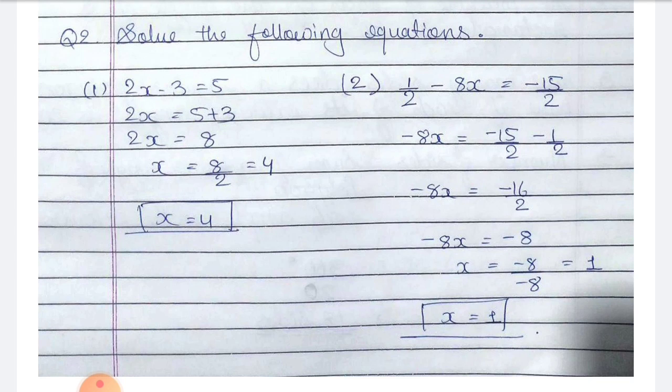Number 2: 1 by 2 minus 8x is equal to minus 15 by 2. Taking 1 by 2 to the other side, we get minus 8x is equal to minus 15 by 2 minus 1 by 2. Since the denominators are the same, we combine numerators: minus 15 minus 1 is minus 16, so minus 16 by 2, which is minus 8. So minus 8x equals minus 8, and x is equal to minus 8 by minus 8, which equals 1. So x is equal to 1.